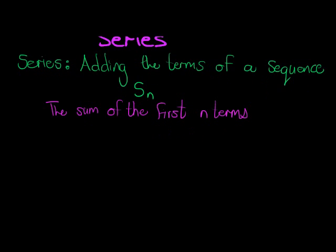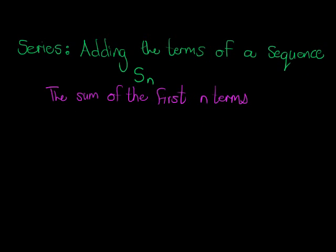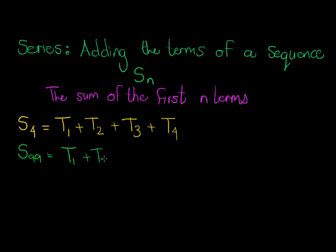So that might sound a little bit up in the air, but for example, if I'm talking about S, well let's make it easy, S4, it means it's the sum of the first four terms. So it's term 1 plus term 2 plus term 3 plus term 4. And if I were to talk about S99, that would be the sum of the first 99 terms. So term 1 plus term 2 plus term 3 all the way up to term 99.